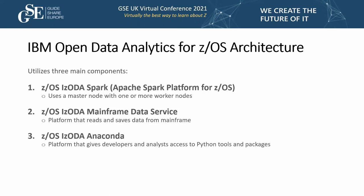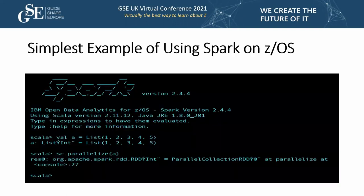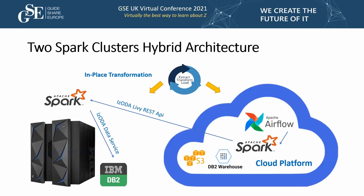IBM Open Data Analytics for ZOS has three main components: ZOS Spark, ZOS Mainframe Data Service, and ZOS Anaconda. We installed and configured Spark for ZOS, allowing us to combine modern cloud analytics tools with mainframe technologies. The main proposition is that we can transform existing mainframe scheduler solutions to modern Airflow DAGs and use them to support mainframe jobs with the help of Spark.